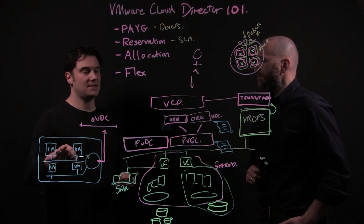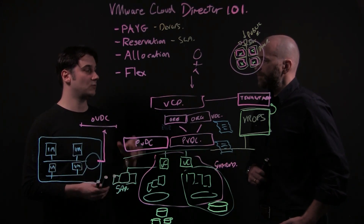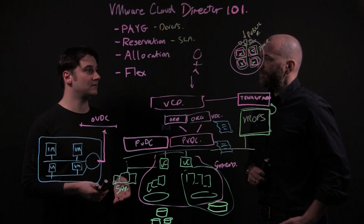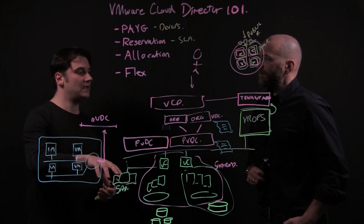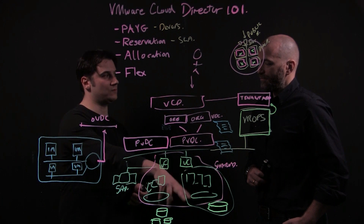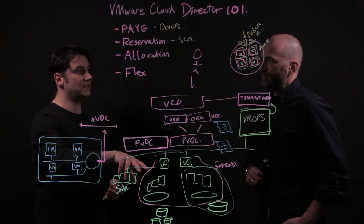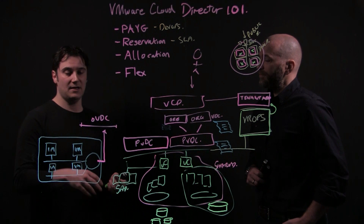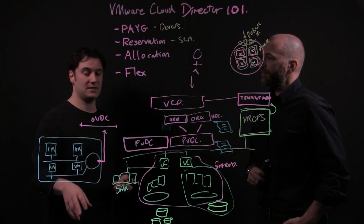If I wanted to take this vApp and move it from one org VDC to another — one virtual data center to another — I can do that in the vCloud Director portal, and these virtual machines will move. That could be a logical move between resource pools in the same cluster, between clusters, or even between sites. In addition to moving, I could make a copy.